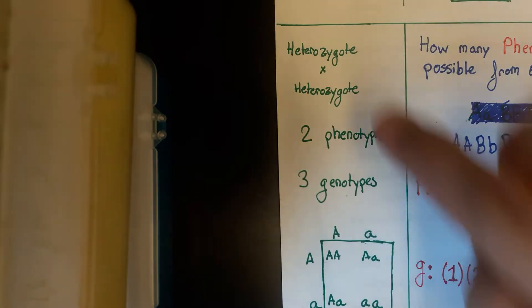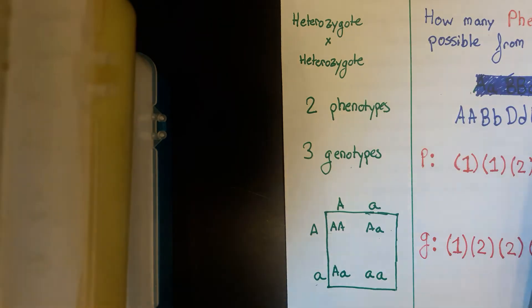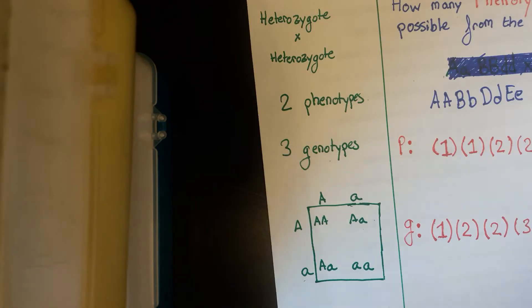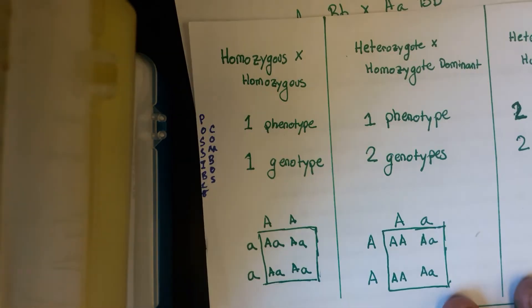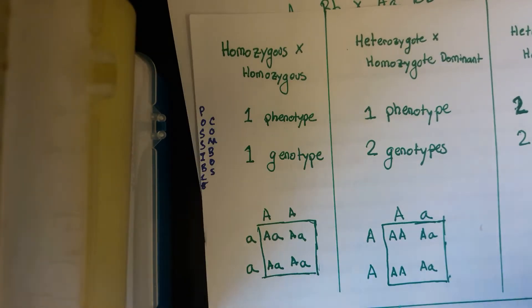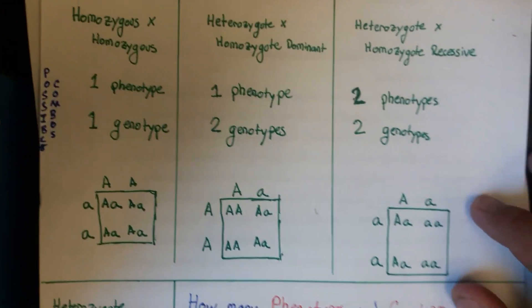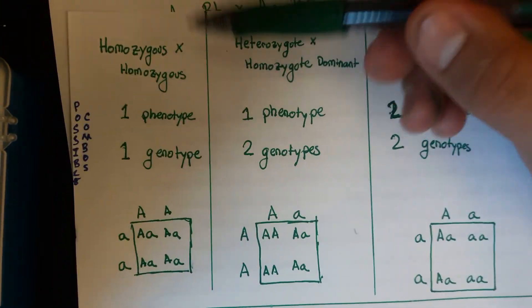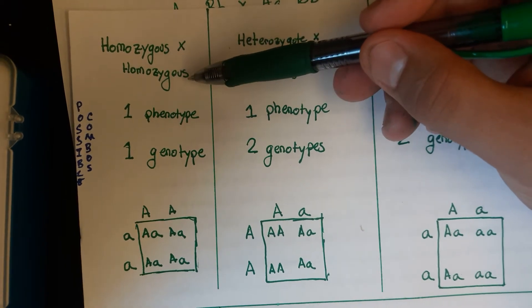So anytime you have two heterozygotes together, like crossing together, you have two possible phenotypes and three possible genotypes. What I did now is I derived how that formula would change in every possible condition. So let's look at these three. Here we have what would happen if you have a homozygote times a homozygote.